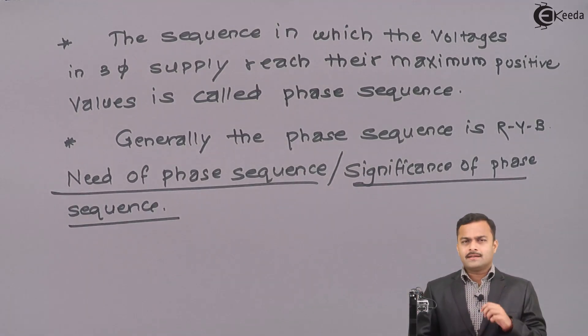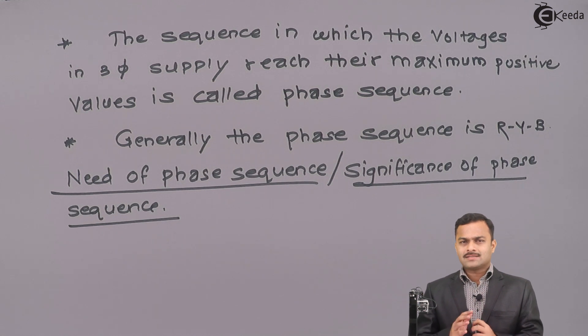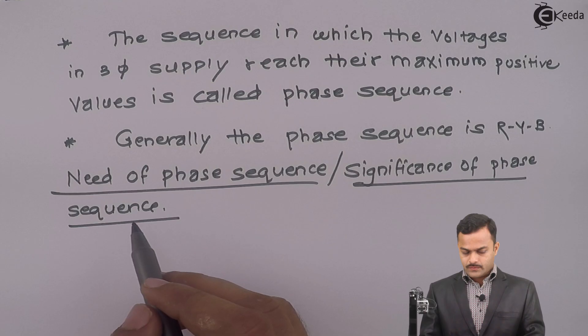What will happen instead of having R, Y, B I have R, B, Y or something like that. So, what is the significance of phase sequence?